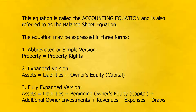The equation may be expressed in three forms. 1. Abbreviated or simple version: property equals property rights. 2. Expanded version: assets equals liabilities plus owner's equity capital. 3. Fully expanded version: assets equals liabilities plus beginning owner's equity capital plus additional owner investments plus revenues minus expenses minus draws.